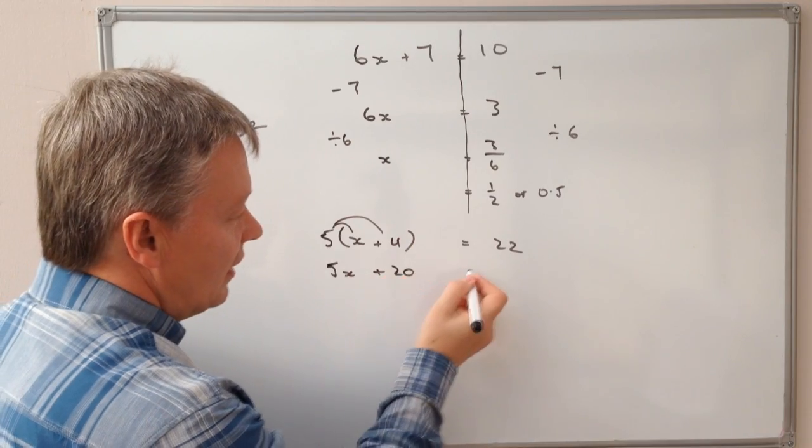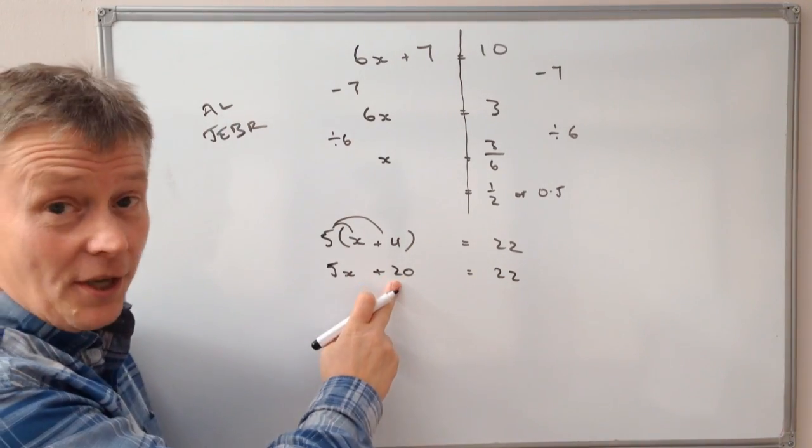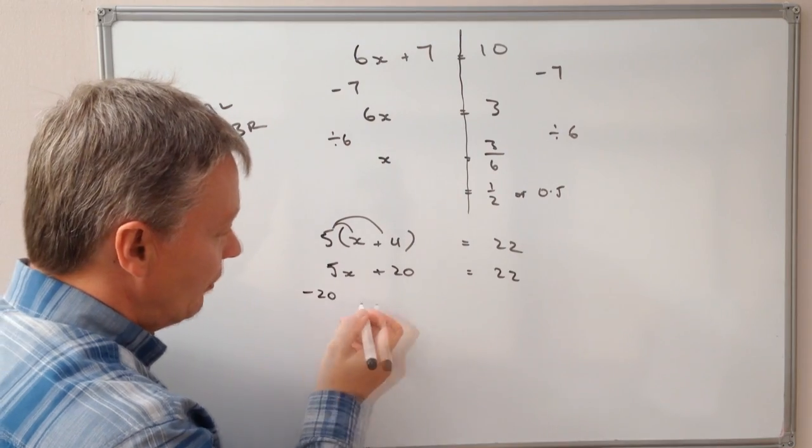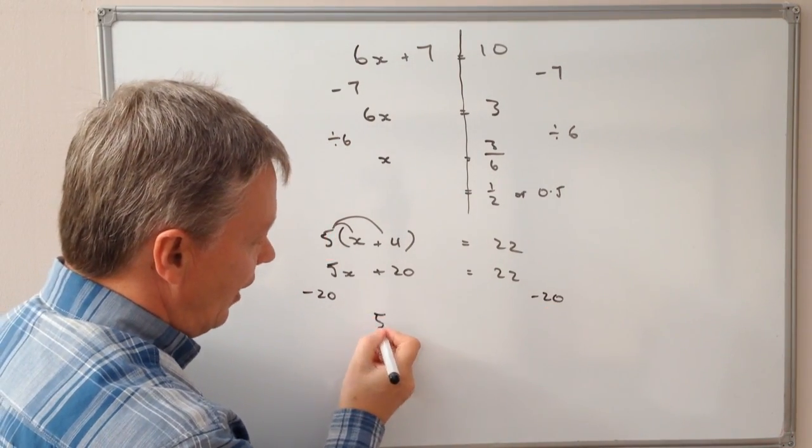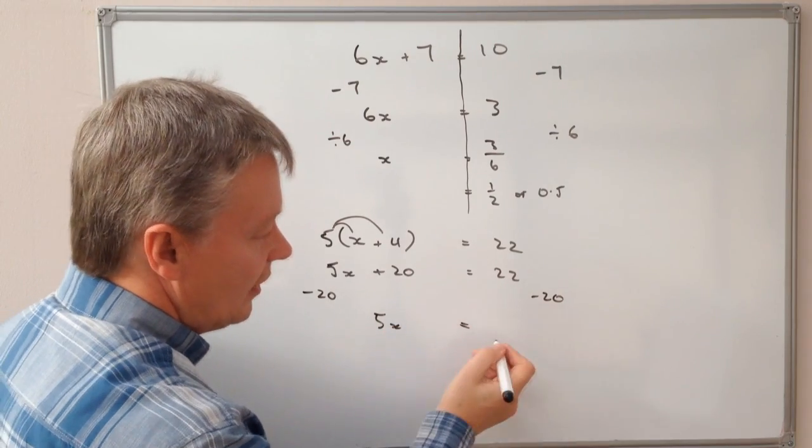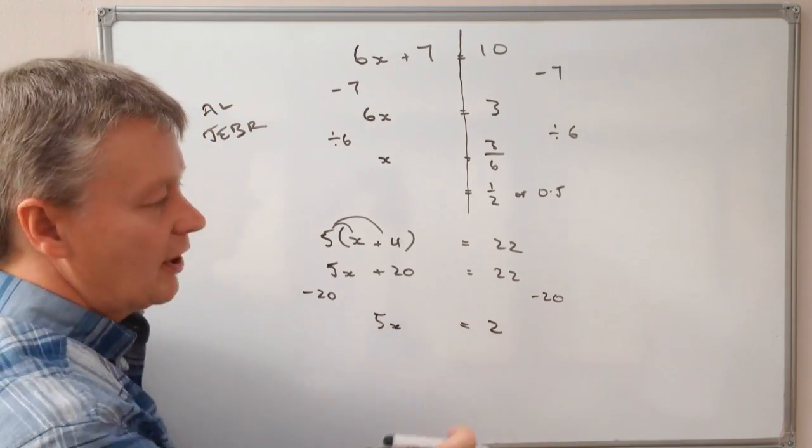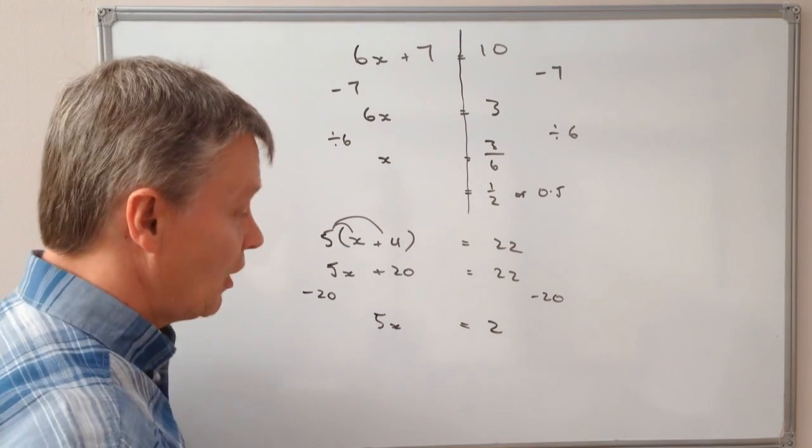plus 20 equals 22. I need to get rid of this number, so I'm going to minus 20 from both sides. OK, and that's going to give me 5x on this side. On this side, I'm going to get just 2, because 22 minus 20 is going to be 2 on its own.